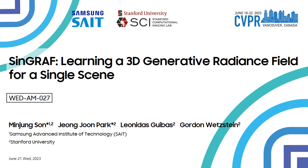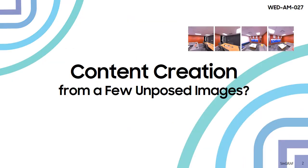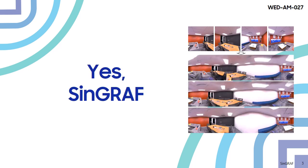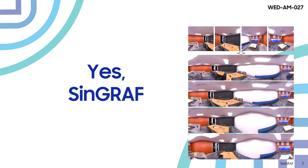We introduce Scene Graph, running a 3D generative radiance field for a single scene. 3D content creation is a challenging task needing professional skills. Can we do that easily using only a few images? Our answer is yes. With Scene Graph, you can generate different 3D scenes with varying layouts that still resemble 2D input images.